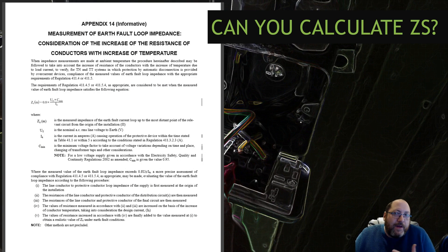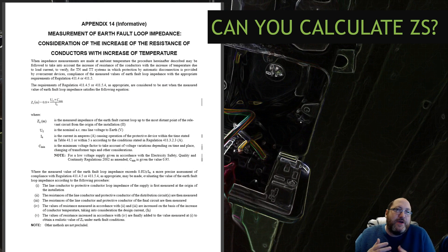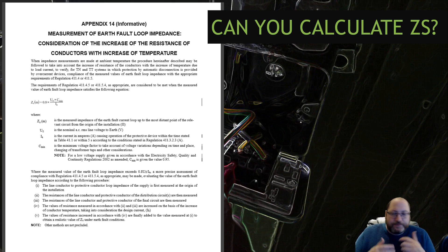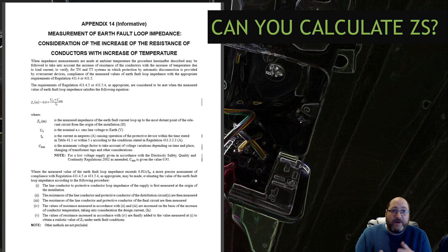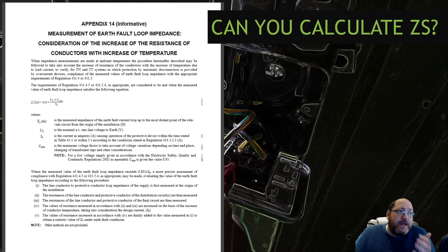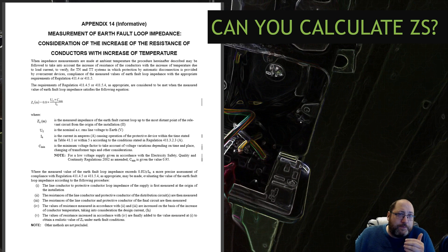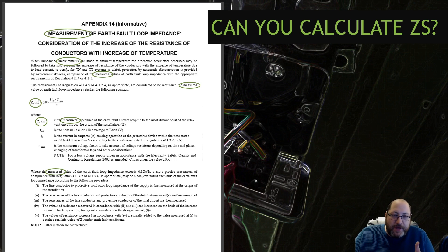Any mention of calculation in Appendix 14? Well, clearly we have the word 'measurement' straight away. It's about the measurement of the earth fault loop impedance and then considering the effect of the rise of conductor temperature. In here, we have measurement, measurement, measurement, measurement. So clearly this is referring to measurement.